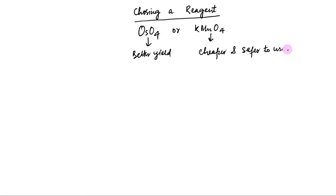To dihydroxylate an alkene with syn-stereochemistry, which is the better reagent? Osmium tetroxide or potassium permanganate? Osmium tetroxide gives better yields, but permanganate is cheaper and safer to use. The answer depends on the circumstances.